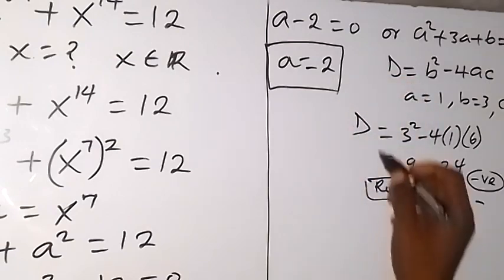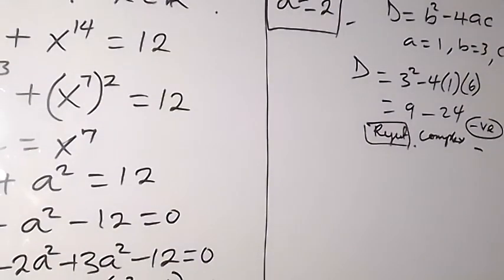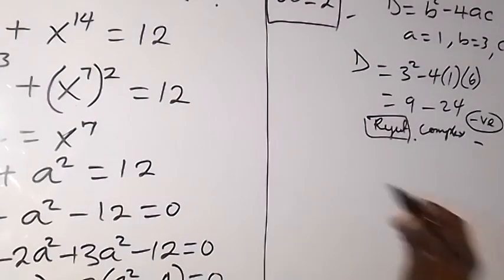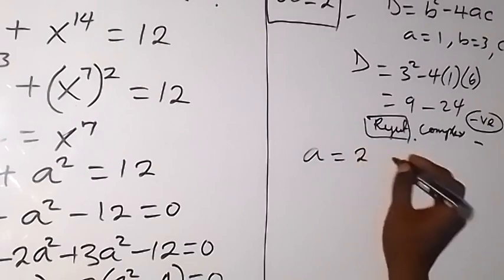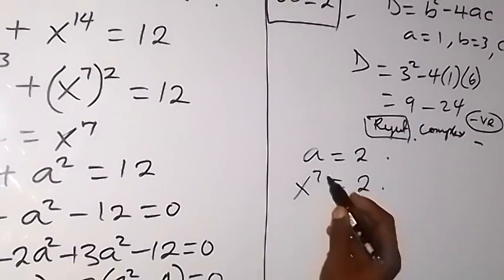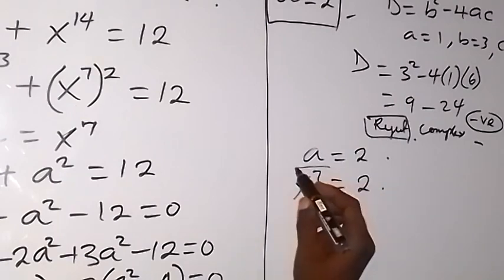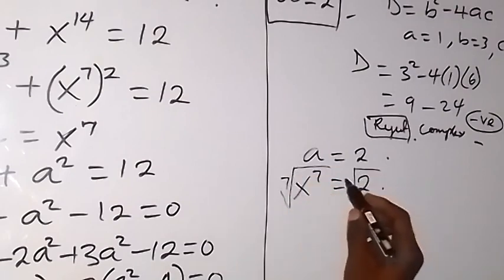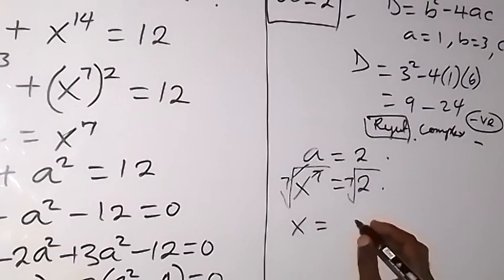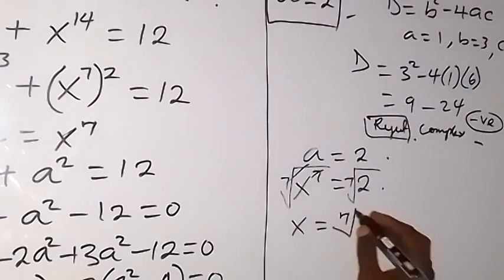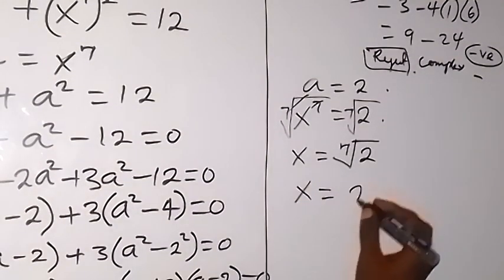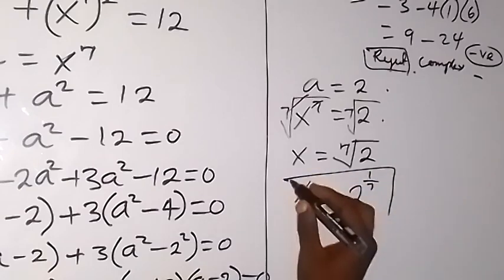For a equals 2, recall we represented a as x raised to power 7. So x raised to power 7 equals 2. We take the 7th root on both sides — the 7th root cancels the power of 7 — giving x equals the 7th root of 2, which we write as x equals 2 raised to power 1 over 7. This is the value of x.